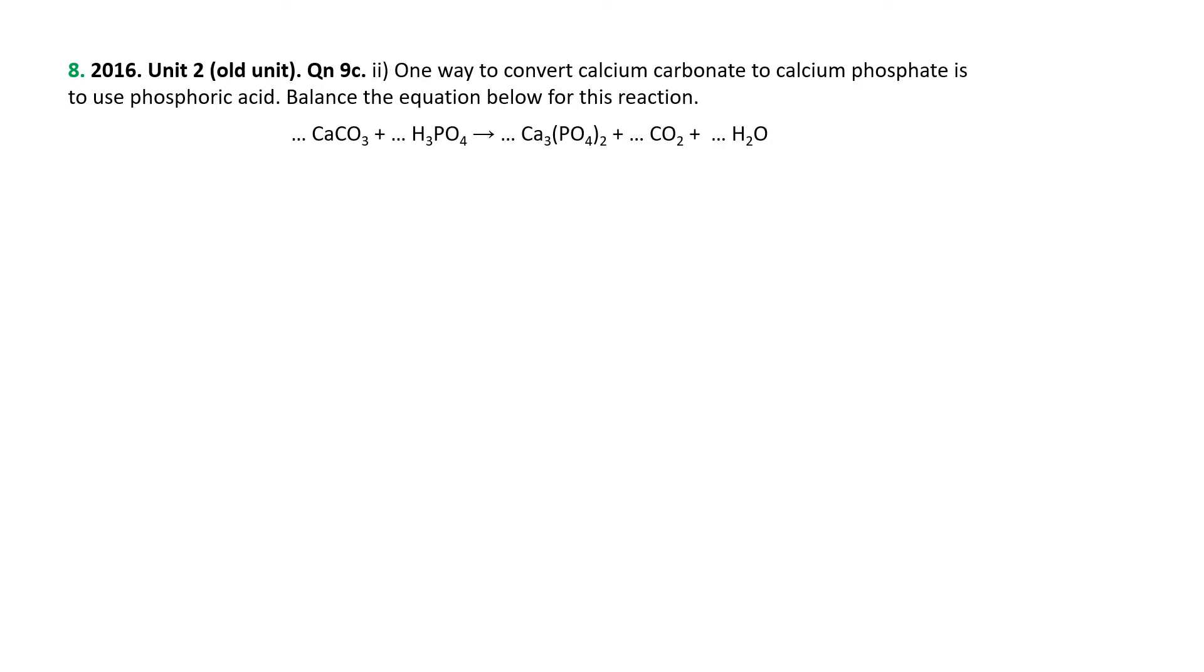Let's get a little bit more challenging. One way to convert calcium carbonate to calcium phosphate is to use phosphoric acid. Balance the equation below for this reaction. So let's color code it first of all. And now again, looking for the simple ones, you can see from the amount of red there that obviously oxygens are disgusting. And indeed, we want to leave the oxygens till the very end. But calciums, the carbons, the hydrogens, the phosphoruses just all occur in one thing on each side. So let's just go through and balance those accordingly.